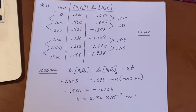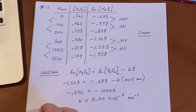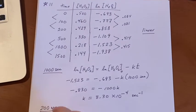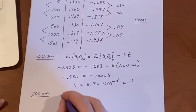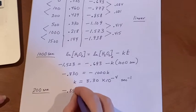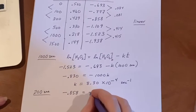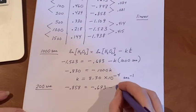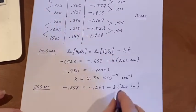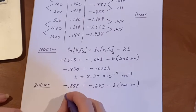I kind of don't trust this yet because it's weird. What if I had done the one at 200 seconds? Would I do any better? So I'll grab the value at 200 seconds, the minus 0.858 and say, is that equal to the minus 0.693 minus K times the 200 seconds? And I will end up working it up the same way.